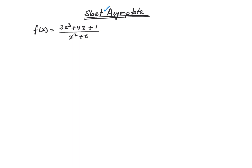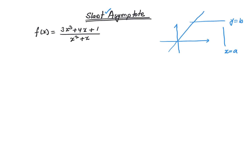In this video, I am going to talk about slant asymptotes. So far, you have seen horizontal and vertical asymptotes. In the horizontal case, the function approaches the value y is equal to b. In the vertical case, the vertical asymptote is typically x is equal to a, where the function goes either to positive infinity or negative infinity. However, there are functions for which the function value approaches some straight line, y is equal to mx plus b.